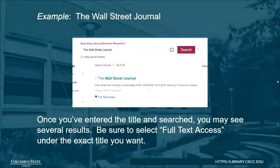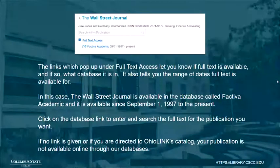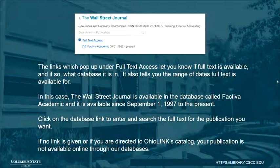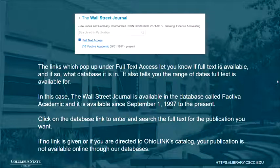Once you've entered the title and searched, you may see several results. Be sure to select Full Text Access under the exact title that you want. The links which pop up under Full Text Access let you know if full text is available, and if so, what database it is in. It also tells you the range of dates full text is available for. In this case, the Wall Street Journal is available in the database called Factiva Academic, and it is available since September 1, 1997 to the present.